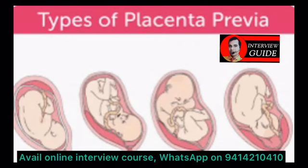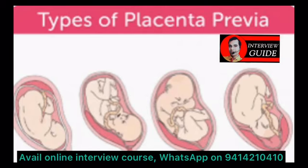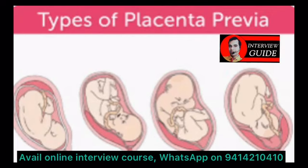Second is circumvallate placenta. These are small central chorionic plates, or small placentas, surrounded by a thick whitish ring composed of a double fold of amnion and chorion. It predisposes to premature marginal separation and can lead to antepartum hemorrhage, premature delivery, or premature death of the fetus.